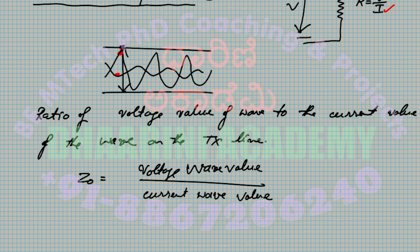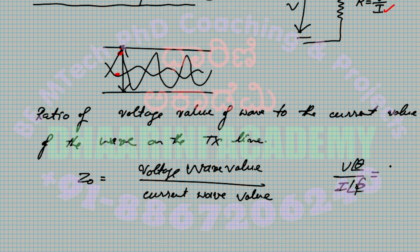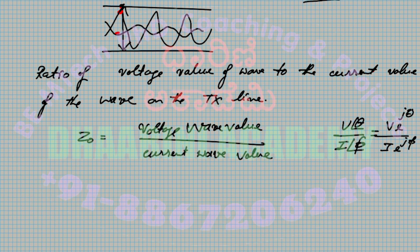Most of the time Z₀ is a complex number, since voltage can be written as V∠θ and current as I∠φ in polar form, giving a complex result. Under some special cases Z₀ becomes real — that happens when the phase difference cancels, i.e., both voltage and current have the same phase.